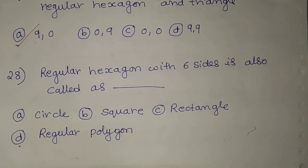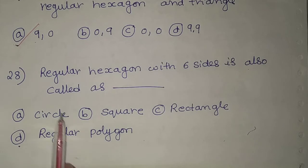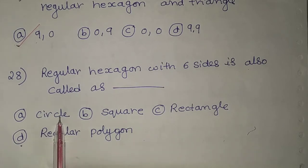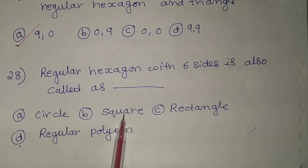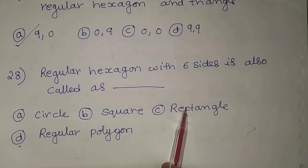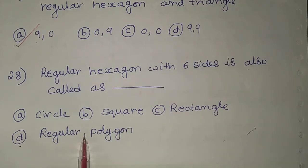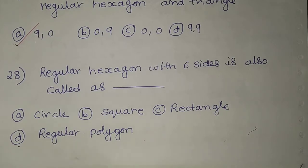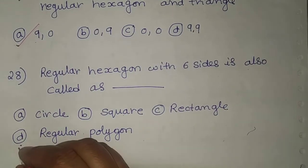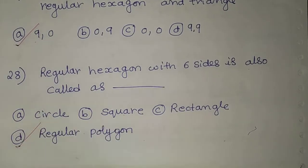The 28th problem: a regular polygon with six sides is always called what? The four options are circle, square, rectangle, and regular polygon. A regular hexagon with six sides is always called a regular polygon. Option D is the correct answer.